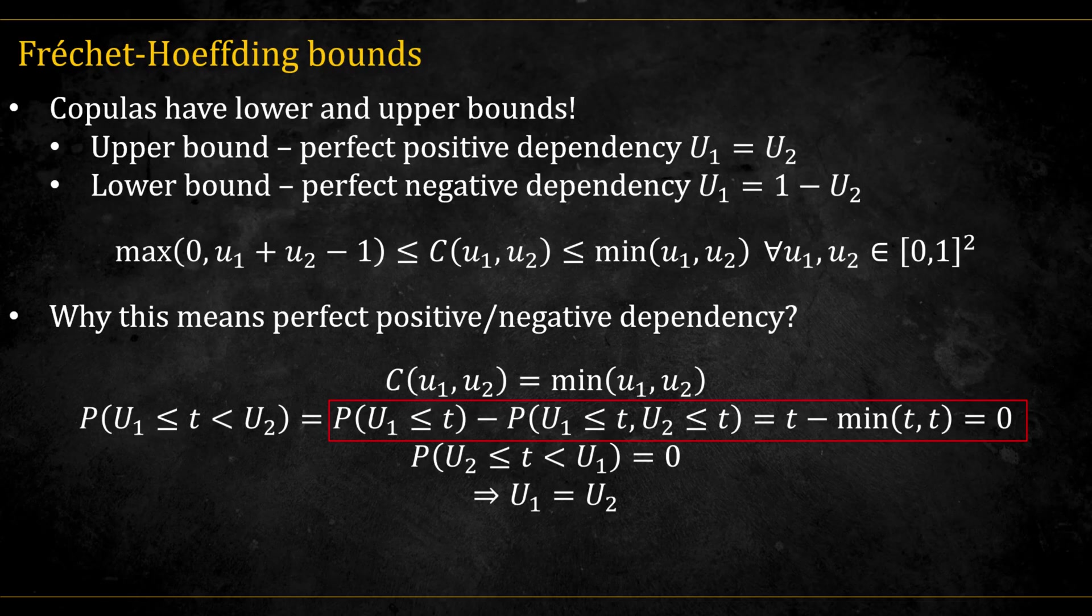Replacing the first term by the marginal probability, and the second by the copula, we get that this is equal to zero. Likewise, we can show that the probability of u1 being greater than u2 is also equal to zero. So u1 must equal u2. And I leave the proof for the lower bound implying perfect negativity also as homework.